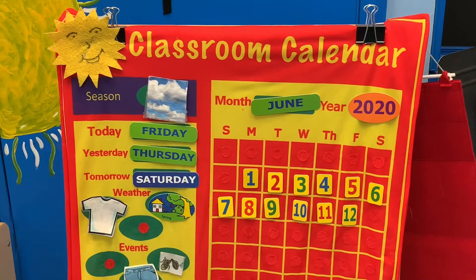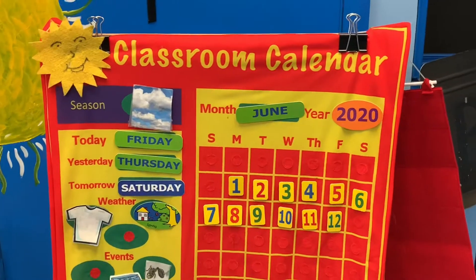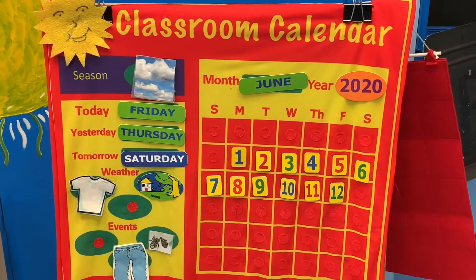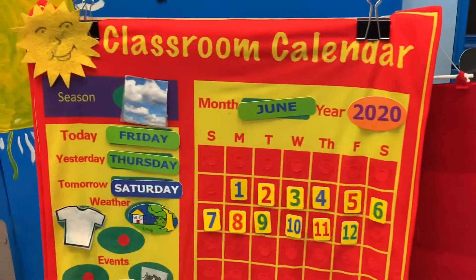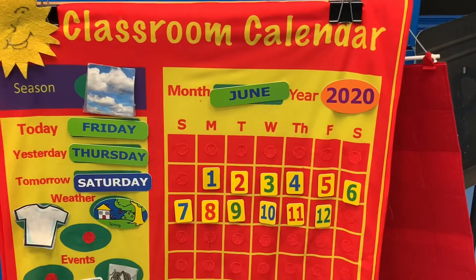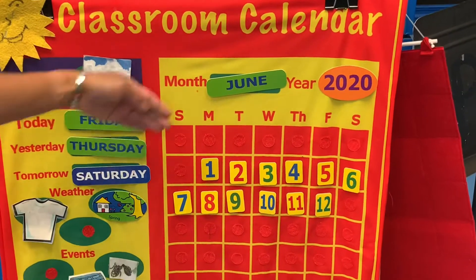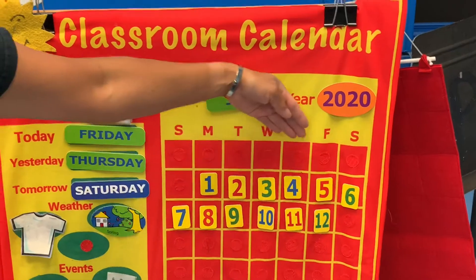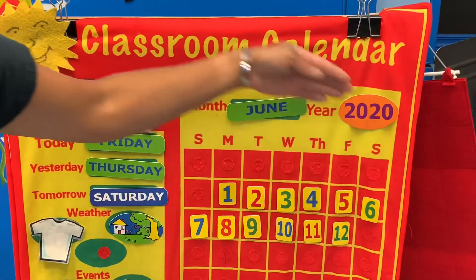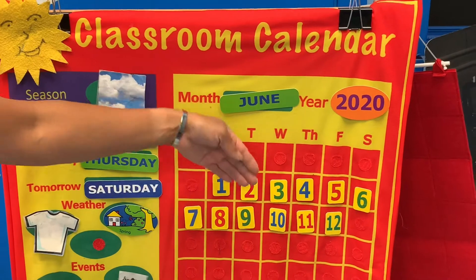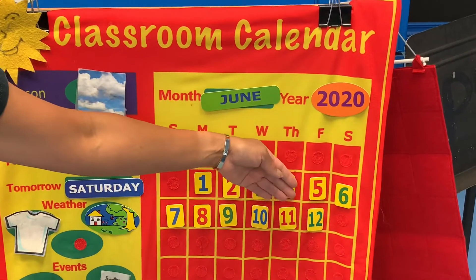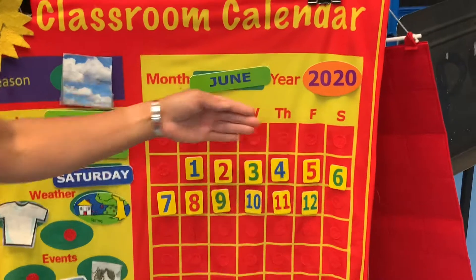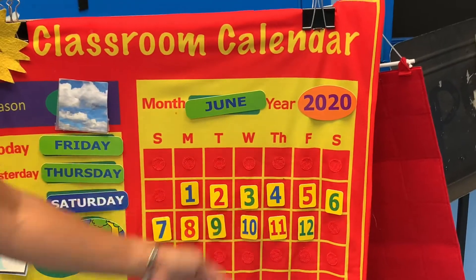We are really waiting for that hot, hot weather to hit. Maybe it will when it's officially summer. Let's count the numbers on the calendar. The month is June and the year is 2020. Let's count — are you ready? 1, 2, 3, 4, 5, 6, 7, 8, 9, 10, 11, 12. Today is Friday, June 12. Let's head over to the number wall.